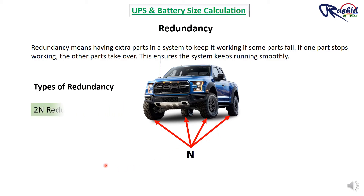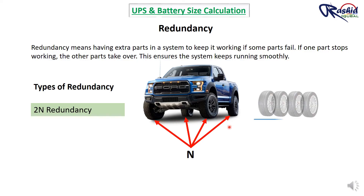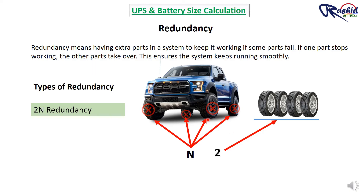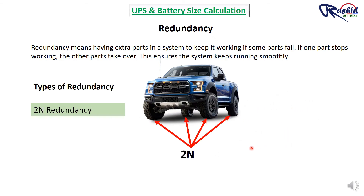The second type is 2N redundancy, where every component has a complete duplicate operating simultaneously. For a car, this means instead of 4 tires you would have two full sets of 4 tires — 8 in total — both fully installed and ready to take over at any time. If any tire from the primary set fails, the secondary set ensures operation continues without interruption.